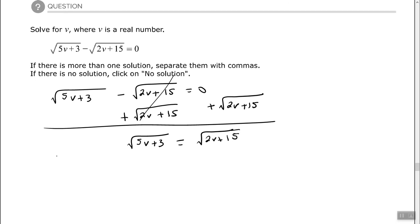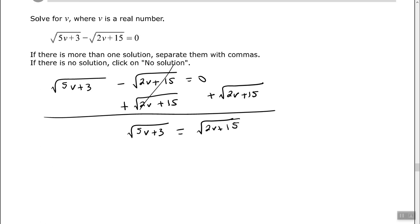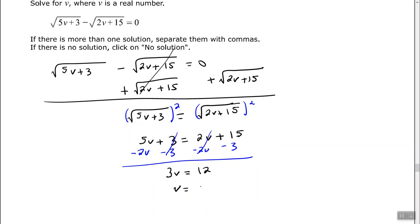The second step is the same as before - we want to clear the radicals by squaring both sides of the equation. That cancels out both radicals. Now we solve the equation by subtracting 2v to move variables to the left and subtracting 3 to move numbers to the right. This leaves me with 3v equals 12, so v equals 4.